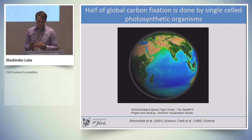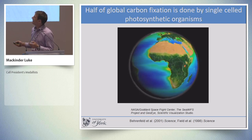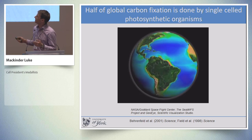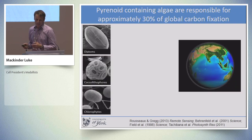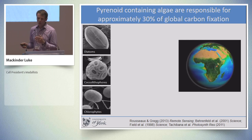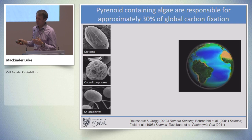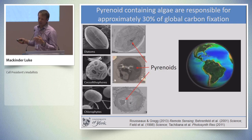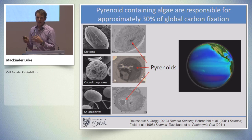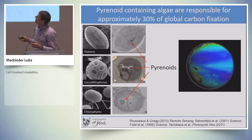What a lot of people aren't aware of is that this organelle is fundamental for driving global carbon fixation. Approximately half of global carbon fixation is done by single-celled photosynthetic organisms in the ocean. Chlorophyll fluorescence, a proxy for photosynthesis, shows large amounts of photosynthesis taking place within the oceans. This carbon fixation is largely driven by diatoms, coccolithophores, and chlorophytes — all eukaryotic algae — which all contain pyrenoids, the aggregation of rubisco. Through calculations, we think approximately 30% of global carbon fixation is taking place within pyrenoids.